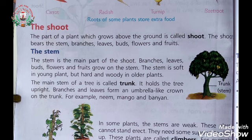The shoot bears the stem, branches, leaves, buds, flowers, and fruits. The stem is soft in young plants but hard and woody in older plants like neem, mango, and banyan. The trunk is very hard and woody.